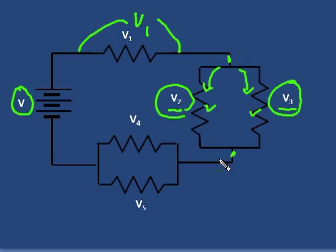And we can also say that the voltage drop across 4 will equal the voltage drop across 5. These two are in parallel. Both will have the same voltage drop. V4 will equal V5.